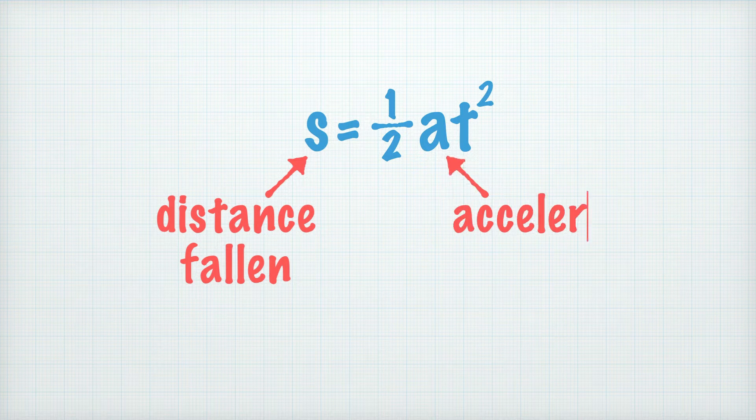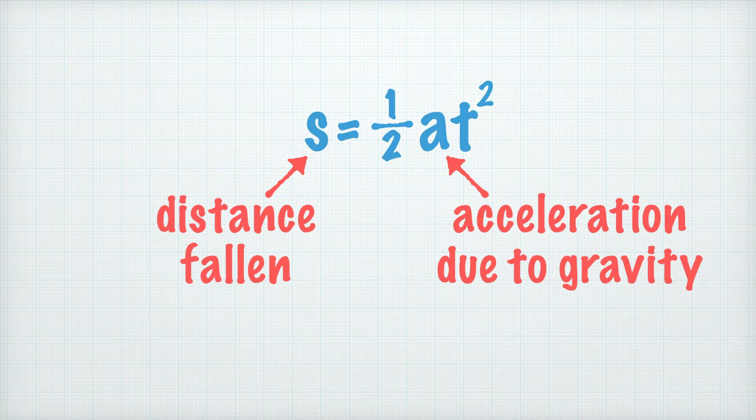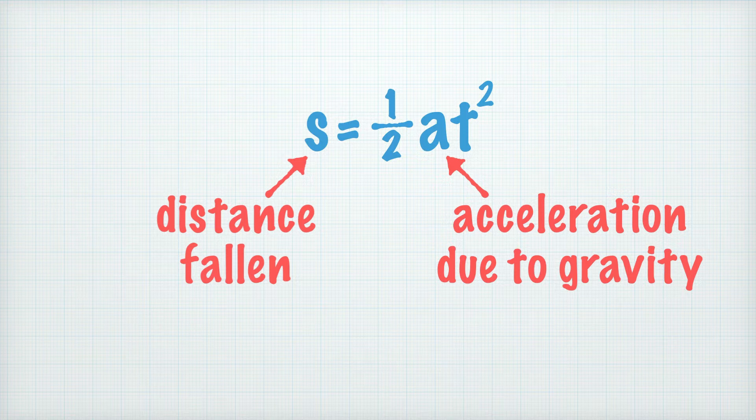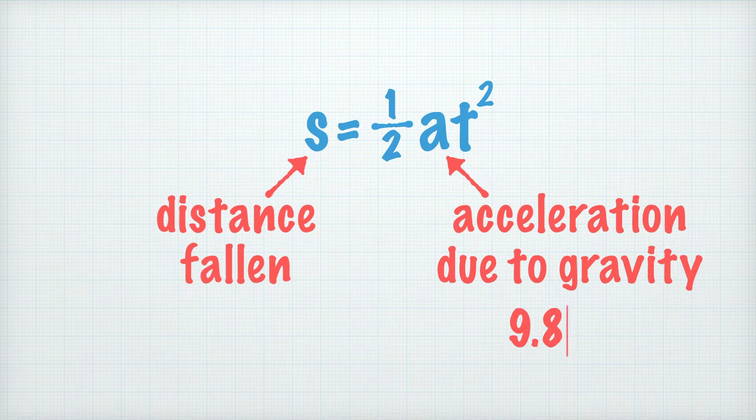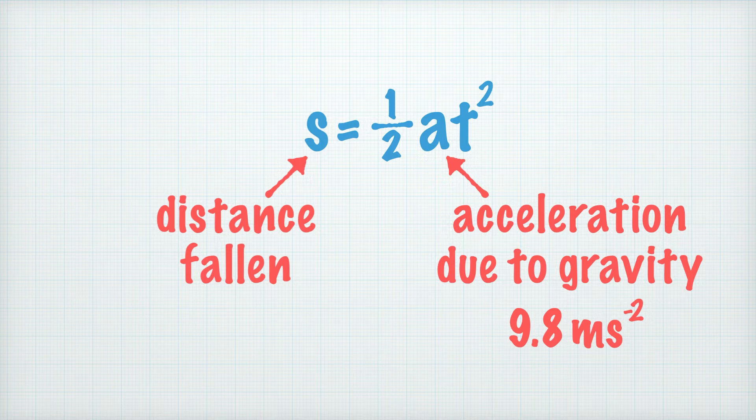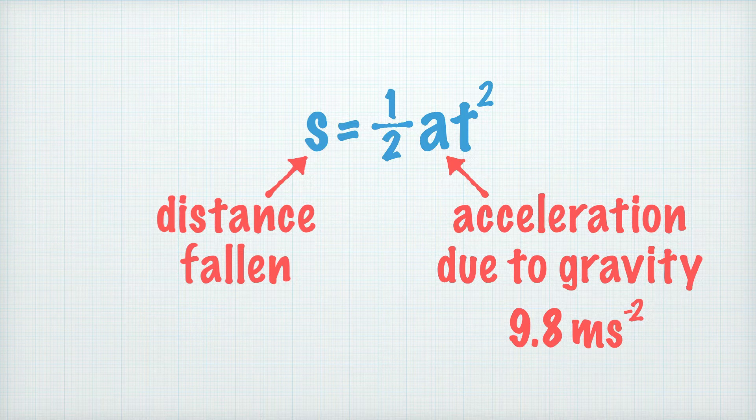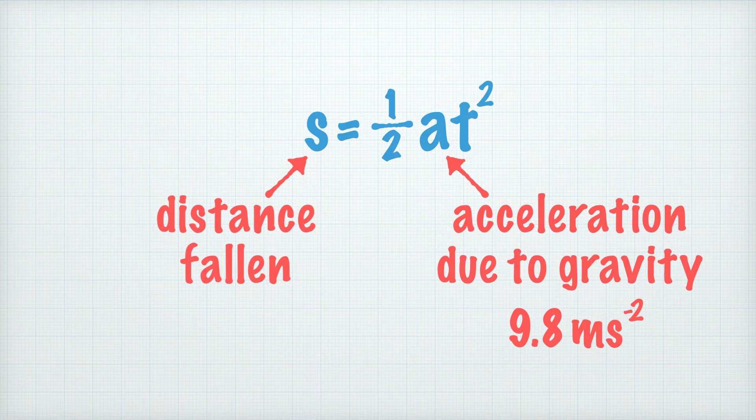a is the acceleration due to gravity on Earth. Now I'm assuming you're not going to be using this timing rod on another planet. Otherwise you'll have to use a different value of g. Anyway, on Earth, g is equal to 9.8 meters per second squared, which means that if you drop something, it'll speed up by 9.8 meters per second every second as it falls, as long as we ignore air resistance.